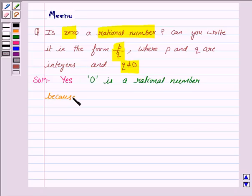Because a rational number is of the form P by Q, where Q not equal to zero. And zero can also be written in this form.